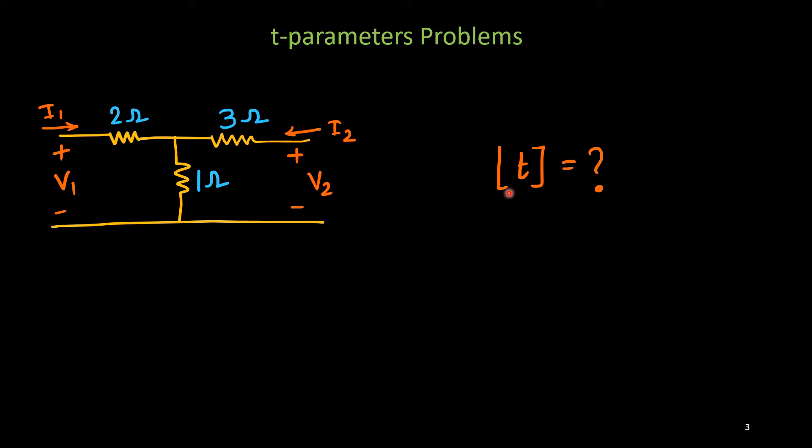Now, today, I want to get the solution of this one using cascading property. So, its solution, we obtained this one. The T would be this 3, 11, 1, 4. Now, let us see how to get this T-Parameters for this T-Network without writing any equation just using this property of cascading.